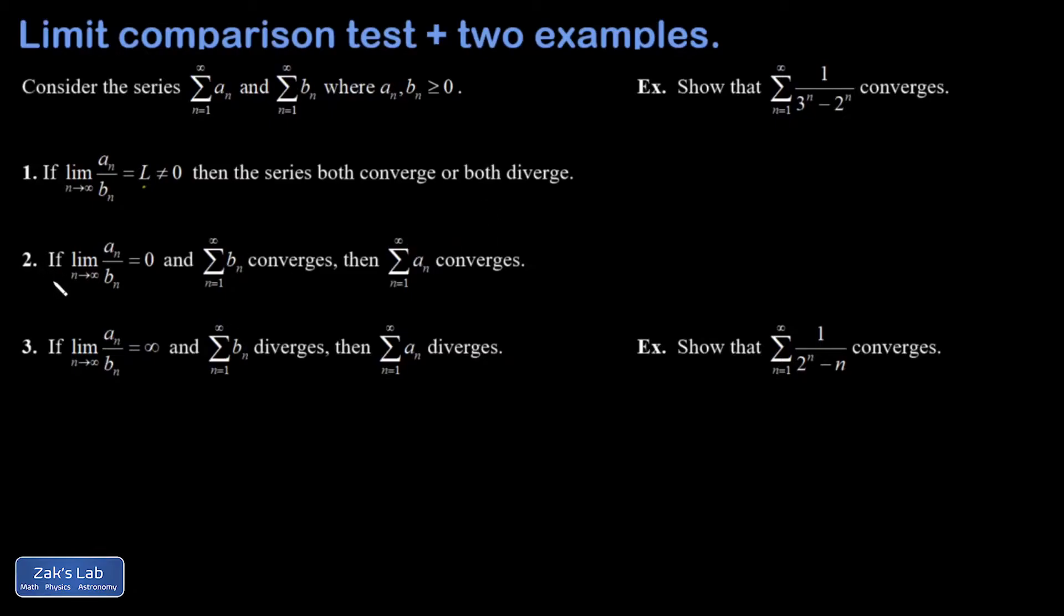There's a couple other little parts to this too. If BN is a convergent series and I show that the limit of AN over BN goes to zero, that's kind of a way of saying the terms of AN are smaller than those of BN, and if BN converges then AN is going to converge too.